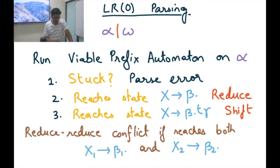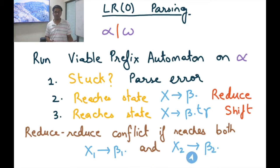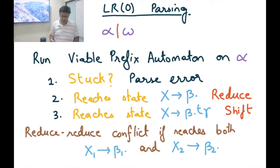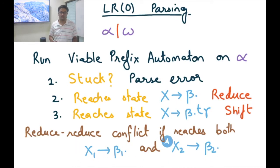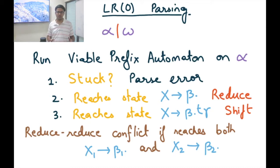It is also possible that we reach two states both indicating a reduction — X1→β1• and X2→β2• — but they indicate different reductions. We could reduce β2 to X2 or β1 to X1, and choosing between them is a reduce-reduce conflict. In a predictive parser we cannot resolve this arbitrarily. Any grammar that does not produce such a conflict can be parsed using the LR0 algorithm and is called an LR0 grammar. Note that LR0 has no lookahead.